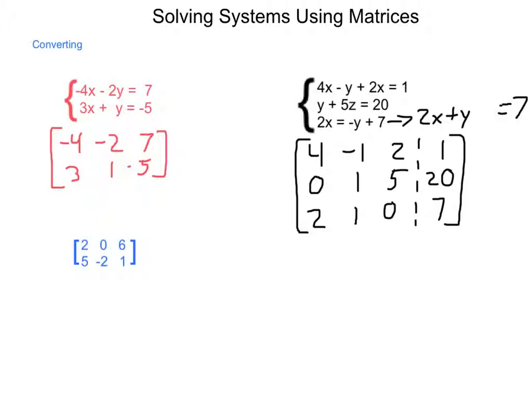What happens when we're given a matrix and we need to write it into an equation? Well, simple. We assign variables to the columns. So we'll call this x and y. It doesn't have to be. It could be a and b, or m and n. And we set up our dotted line for our augmentation. And then we simply rewrite it. We have 2x = 6, because there's no y, and 5x - 2y = 1. So we're able to move back and forth between a matrix and a system of equations, either direction.